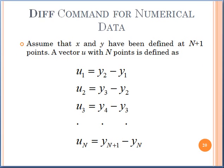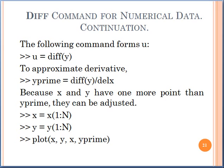Here are the commands for numerical data. We assume that x and y have been defined at n+1 points, and a vector u with n points can be defined using x and y. You can use u1 equal to y2 minus y1, and similarly u2, u3, and in general u(n) equals y(n+1) minus y(n). The command is u equal to DIFF of y using these relations, and for approximating, y prime equals DIFF(y) divided by Δx.